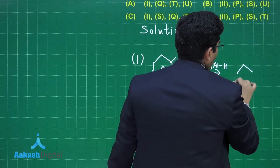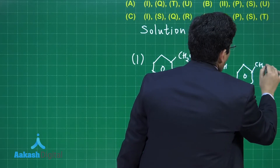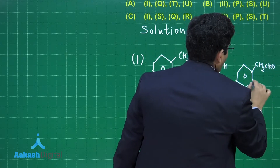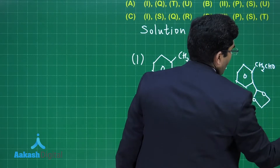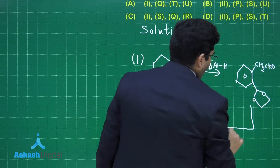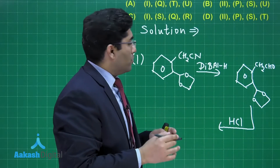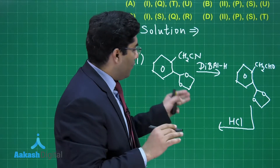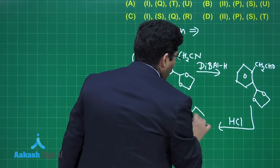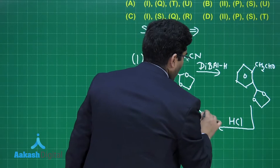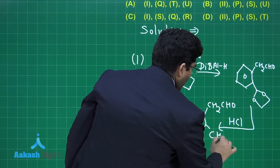So we get CH₂CHO with the same ring. In the next step, HCl is added. We know that acetals and hemiacetals form in the presence of HCl and that is a reversible reaction — adding HCl to this acetal will give us the aldehyde back. So we get CH₂CHO and CHO here.